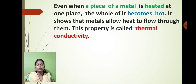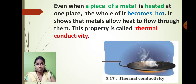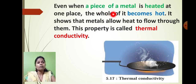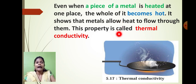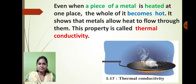Most of the time you must have seen that during cooking we keep the pan on the gas. When we heat it continuously, that pan becomes very hot. This property is called thermal conductivity. Thermal conductivity means that whenever a piece of metal is heated continuously, the whole substance becomes continuously hot — the metal allows heat to flow through it. This property of the metal is called thermal conductivity.